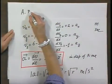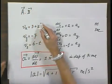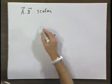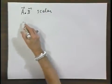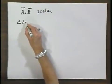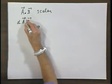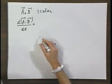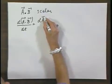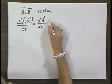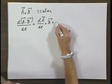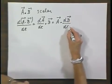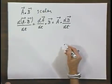A dot B is a scalar. If I take the time derivative of A dot B, then I apply the chain rule: dA/dt dot B plus A dot dB/dt. This is scalar.